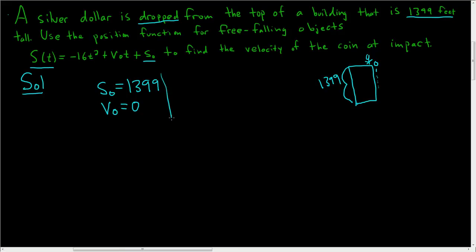Let's go ahead and rewrite our equation. So S of t is equal to negative 16t squared. And V sub 0 was equal to 0 because the dollar is being dropped. So that's gone. And S sub 0 is 1,399.